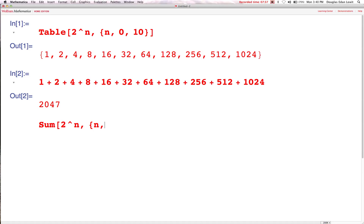Sum 2 to the power n. n goes from 0 to 10. Shift, enter. 2047. You see, I told you there was an easier way to do the problem. Now, let's get back to that compound interest problem that we were talking about.